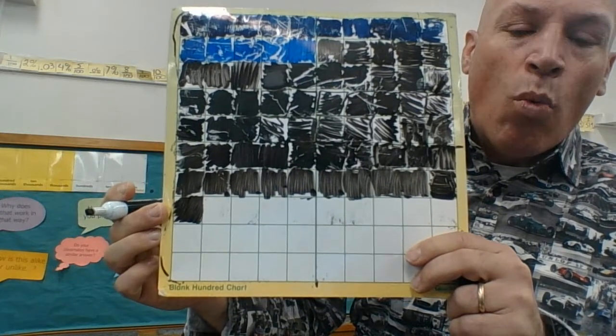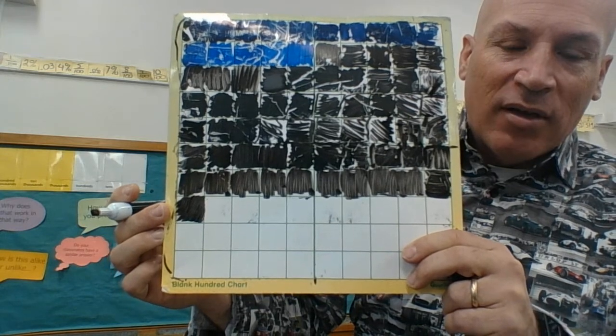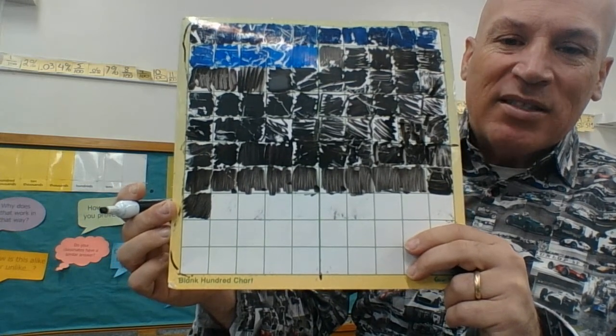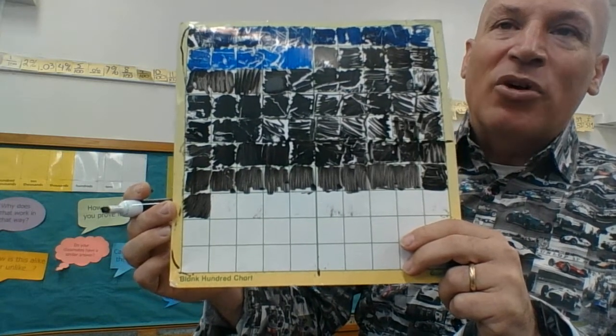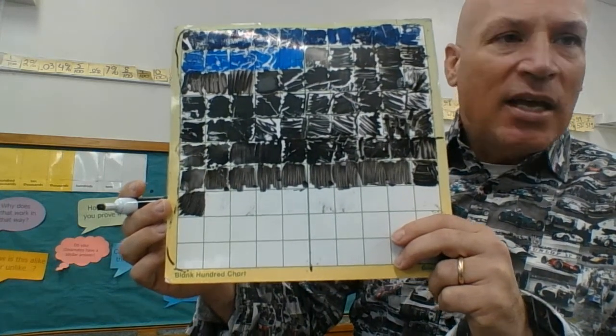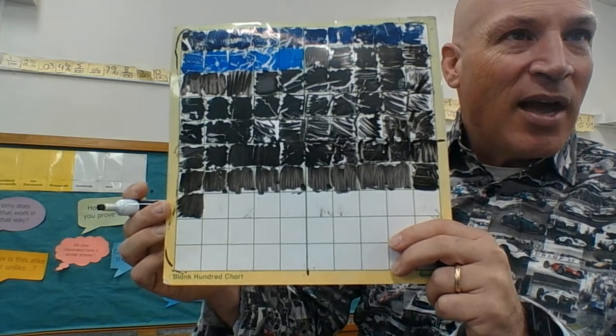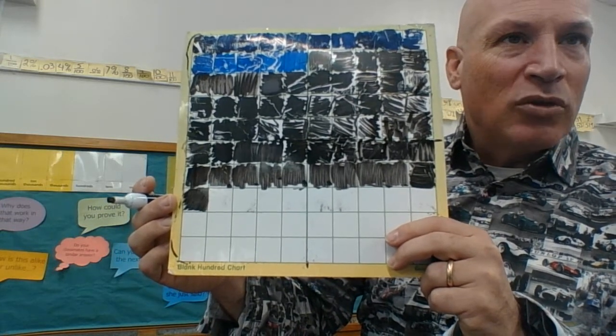Now we have 71 100ths. So think about that. Think about simplifying 71 100ths. Some bells should be ringing about what type of number 71 is and seeing if we can simplify that, just going through our mental toolbox.